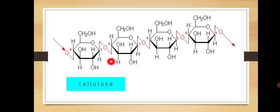Every glucose monomer is flipped relative to the next one, resulting in a linear fibrous structure. Just to give that flipped appearance, the bond is beta-1,4 glycosidic bond. So cellulose consists of glucose subunits joined by beta-1,4 glycosidic bond.